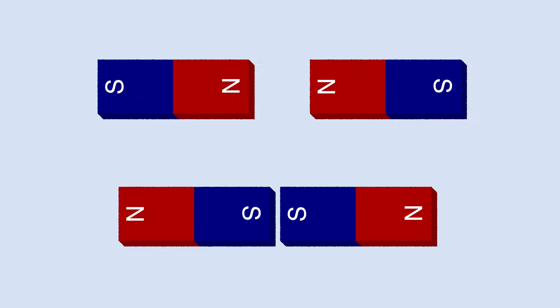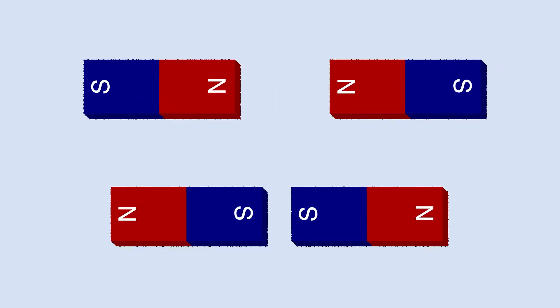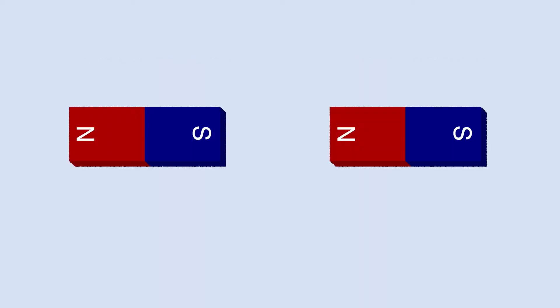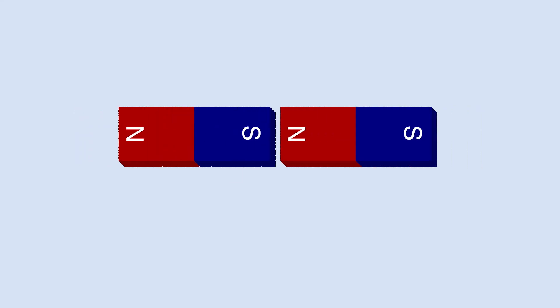When two magnets interact, like poles will repel. A north will push another north away, and a south will push another south away. But unlike poles, one south and one north will attract each other.